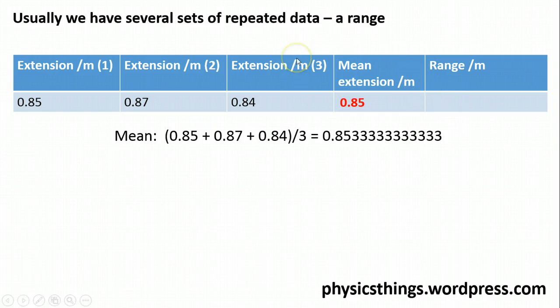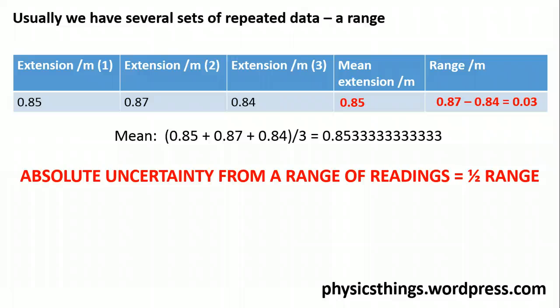Now, my range is just my largest extension, 0.87, take away my smallest extension, 0.84. That basically gives me the spread of my results. Now, to convert your range or your spread into an absolute uncertainty, you just halve it. So the absolute uncertainty from a range of readings is half the range.